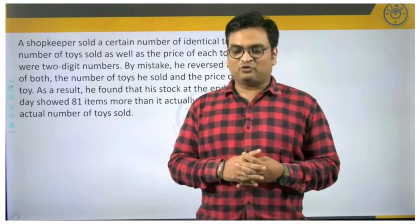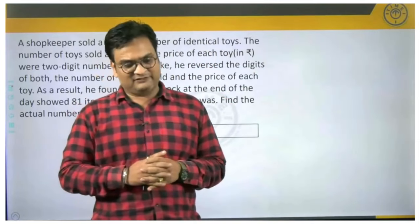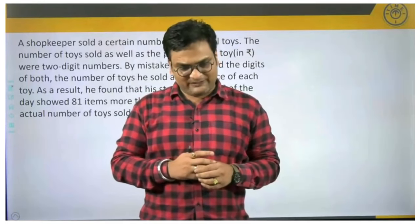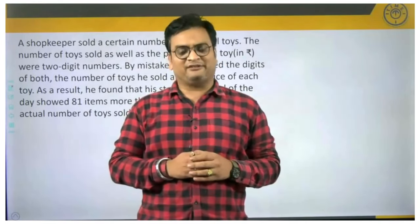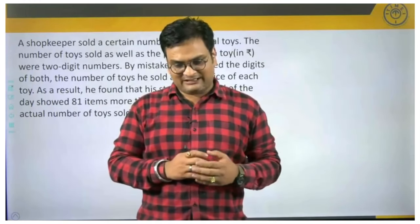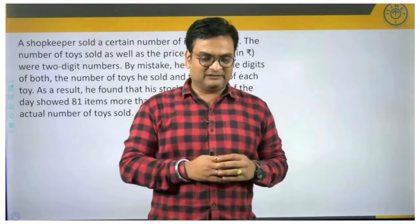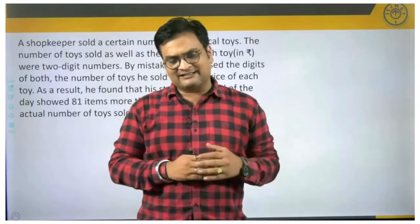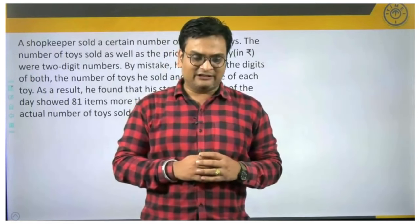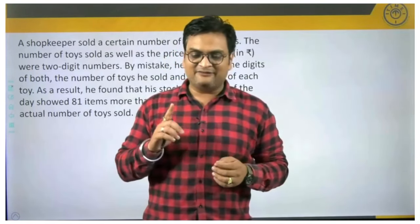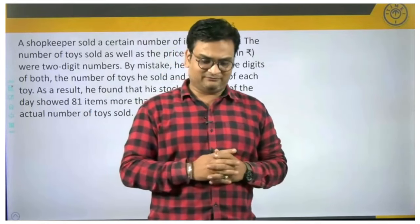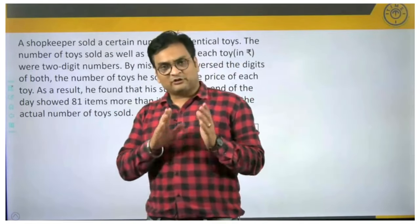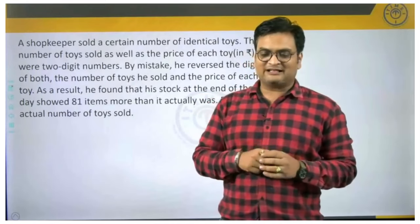Let us read the question together. It says a shopkeeper sold a certain number of identical toys. The number of toys sold as well as the price of each toy in rupees were two digit numbers. By mistake, he reversed the digits of both, the number of toys he sold and the price of each toy. As a result, he found that his stock at the end of the day showed 81 items more than it actually was. Find the actual number of toys sold. Please understand one thing, focus on the last part here.